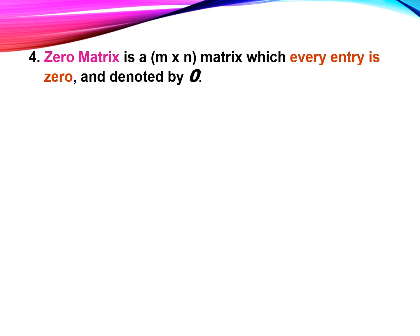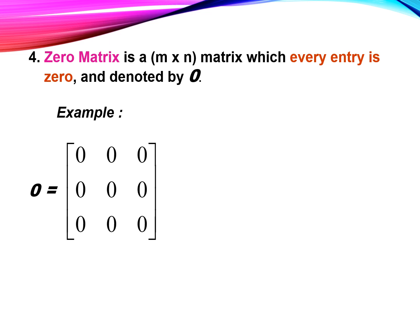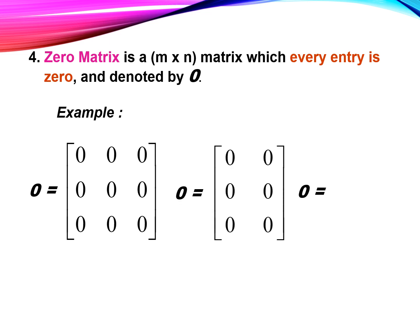Number four, zero matrix. A zero matrix is a matrix whose elements are all zeros. For example, a zero matrix 3 by 3, a zero matrix 3 by 2, and a zero matrix 2 by 2.